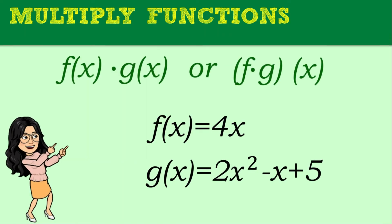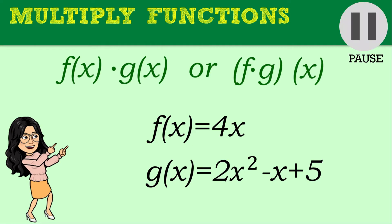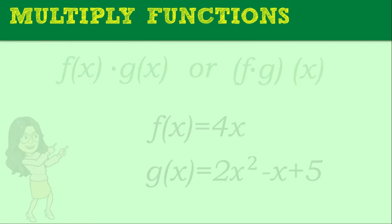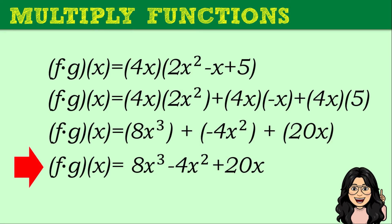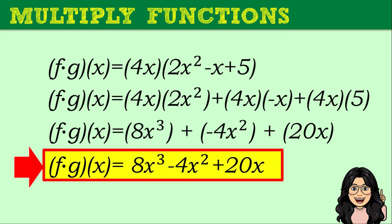Let's try another one. If f(x) = 4x and g(x) = 2x² − x + 5, find f times g of x. You may pause this video and take your time answering. The final answer is 8x³ − 4x² + 20x.